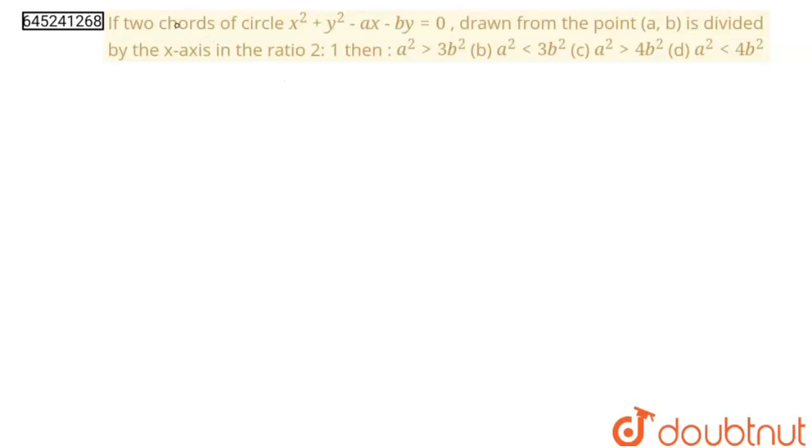Hello students, here the question is: if two chords of this circle drawn from point (a,b) is divided by the x-axis in ratio 2:1, then which of the following option is correct? So let's find this.